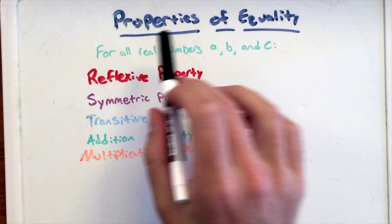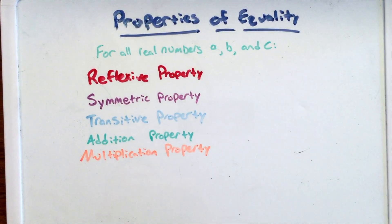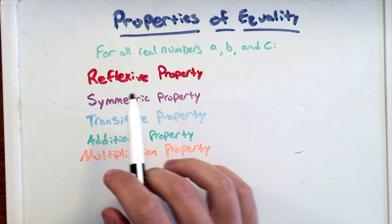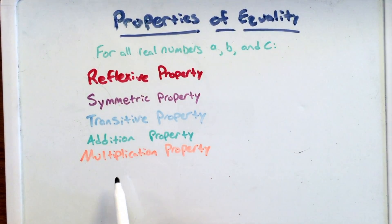In this video we're going to talk about the properties of equality. There are many different properties of equality: reflexive, symmetric, transitive, addition, and multiplication property.